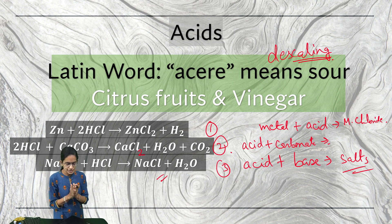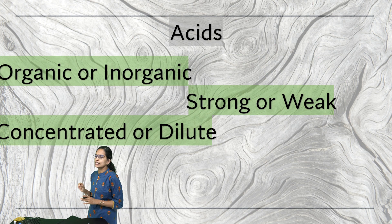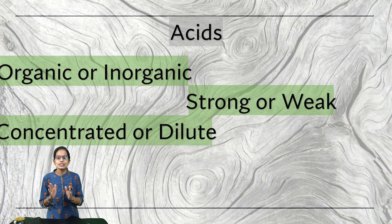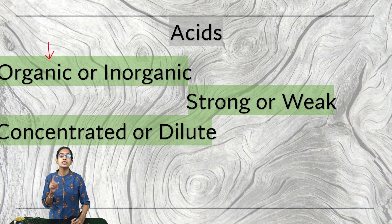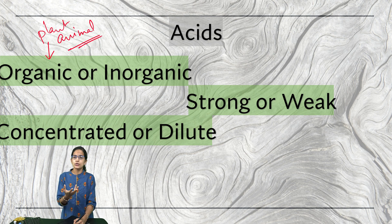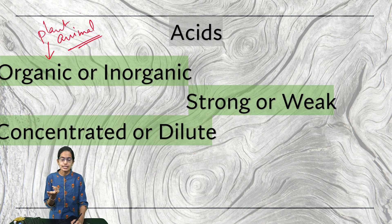Acids can be classified into three categories: organic and inorganic, strong and weak, and concentrated and diluted. Organic acids are those found naturally — they can be from plants or animals. For example, formic acid from insect bites is an animal acid, and tartaric acid from tamarind is a plant acid.